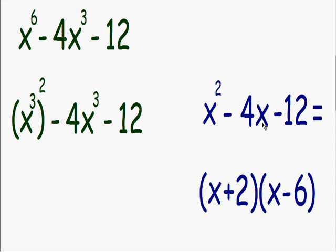In the blue trinomial, we have an x multiplied by negative 4. And in the green trinomial, we have an x cubed multiplied by negative 4. So in other words, everywhere that there is an x in the blue trinomial, there is an x cubed in the green trinomial.